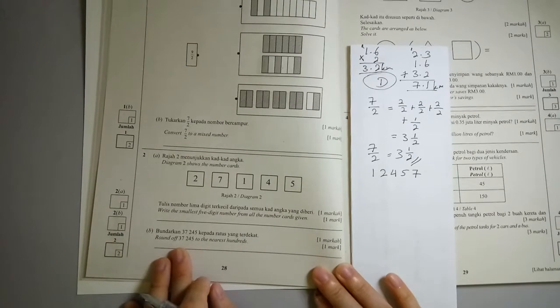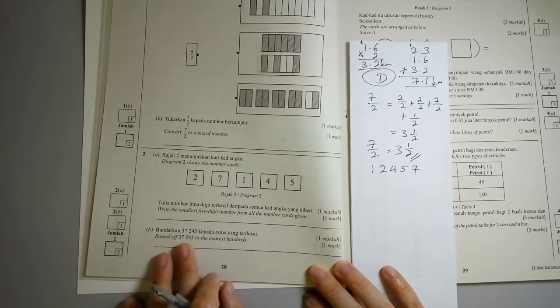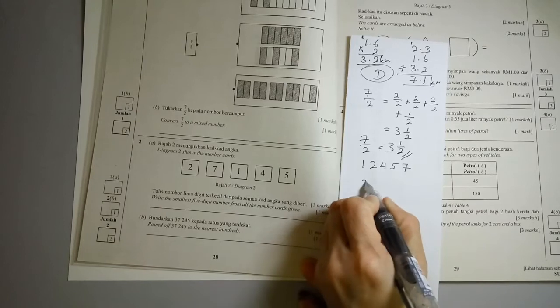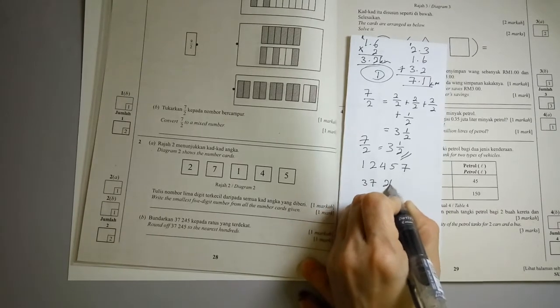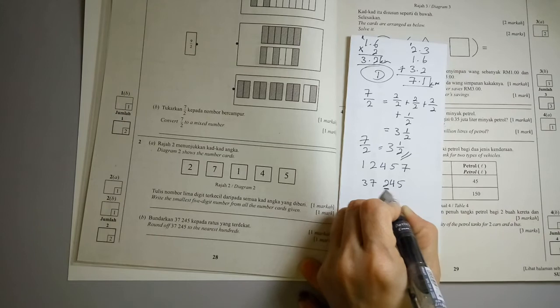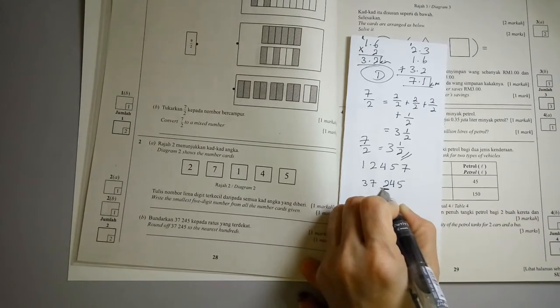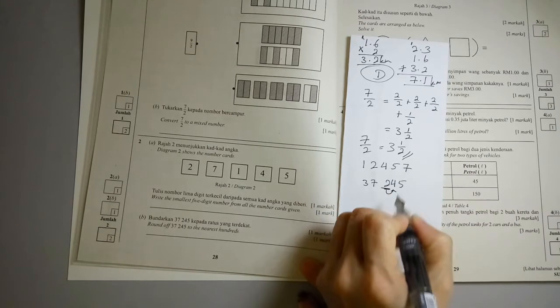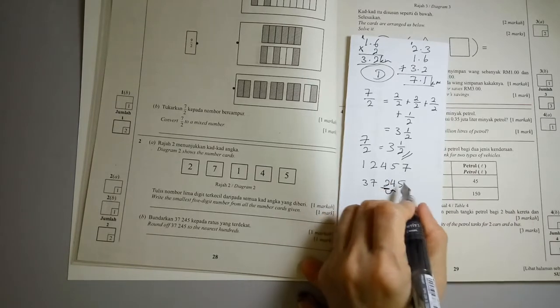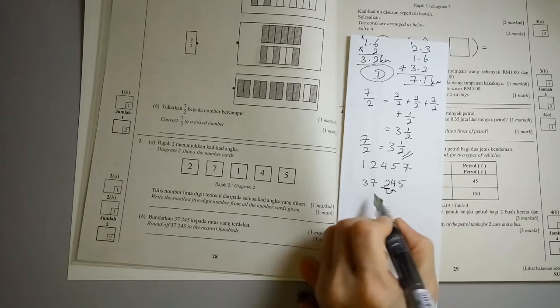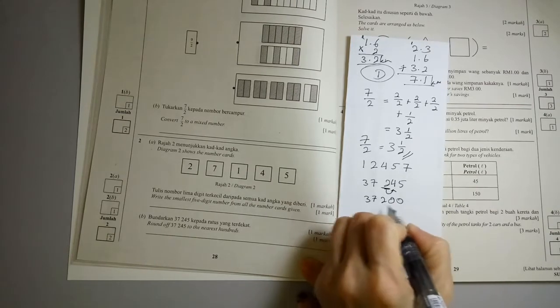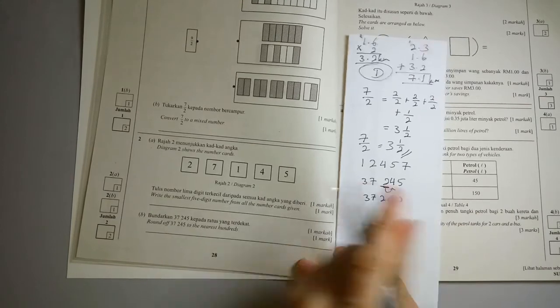Now the next part B, they want you to round off 37,245 to the nearest 100s. So you have 37,245. So you have 1s, 10s and 100s. So you're rounding it to the nearest 100s. That means you're looking to the number on its right. So if it's 5 or more, then your 100s, you're plus 1, the rest becomes 0. But because 4 is smaller than 5, so when you round it up, it becomes 37,200. You don't add a 1 to your 2.